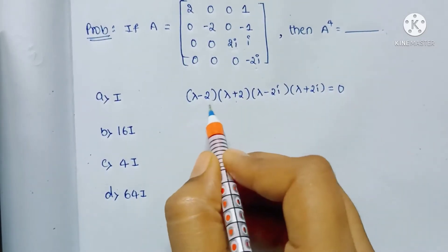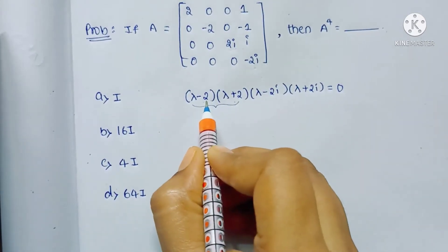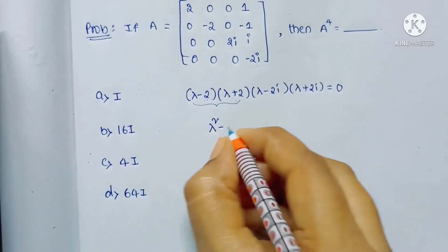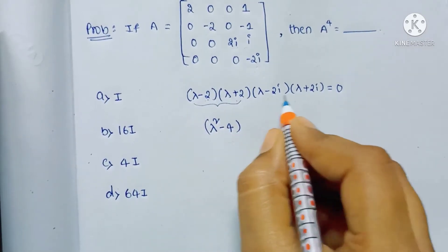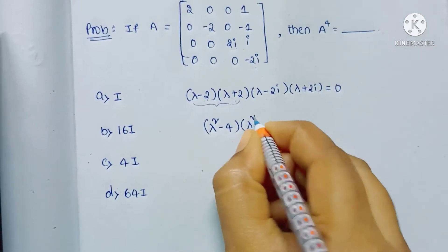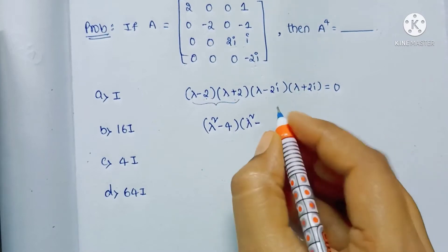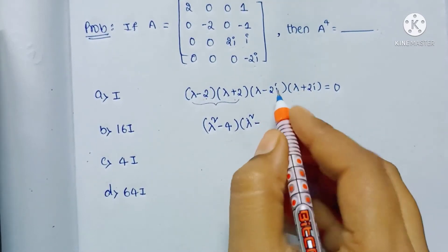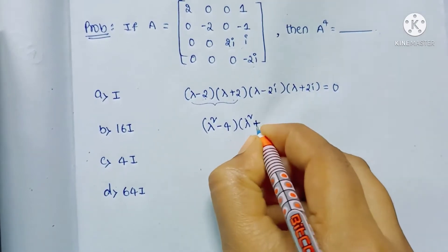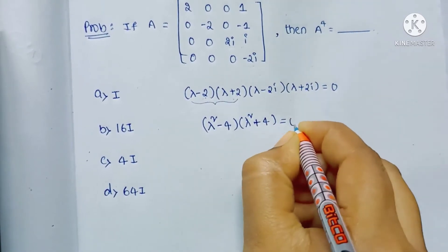Using the identity (A + B)(A - B) = A² - B², we get (λ² - 4) for the first pair. Similarly for the second pair, (λ² - (2i)²) = λ² - 4i² = λ² + 4, since i² = -1. So the product becomes (λ² - 4)(λ² + 4) = 0.